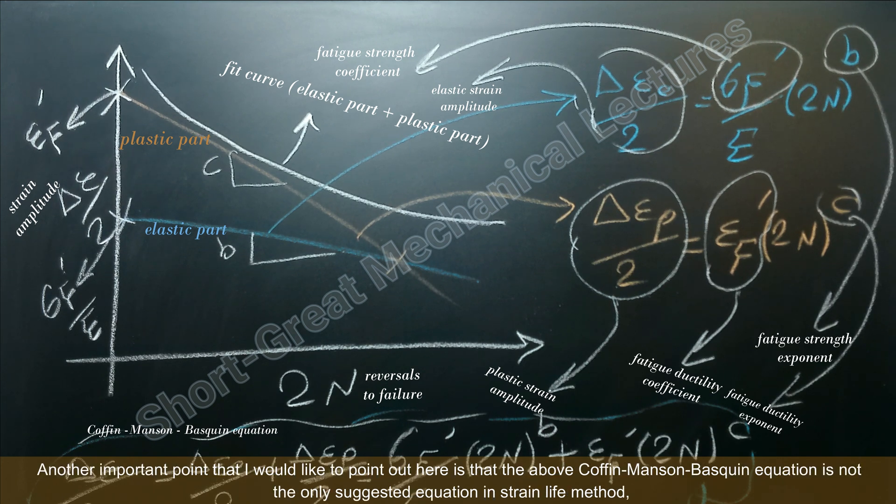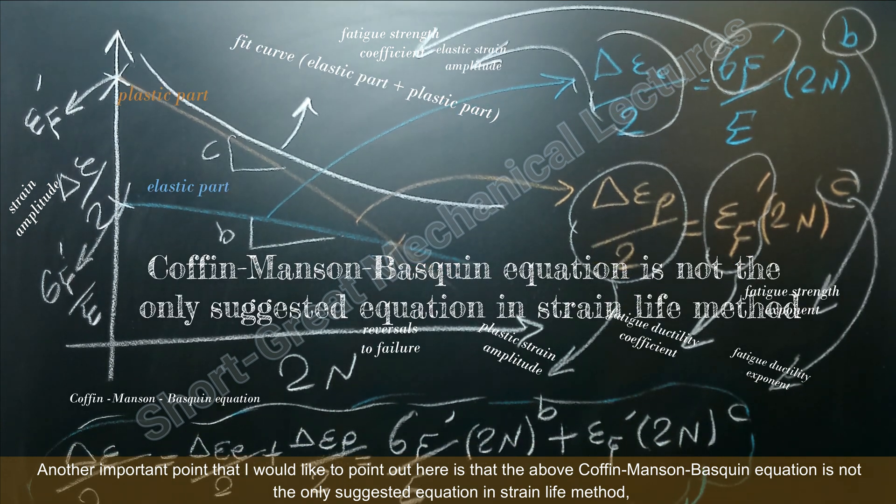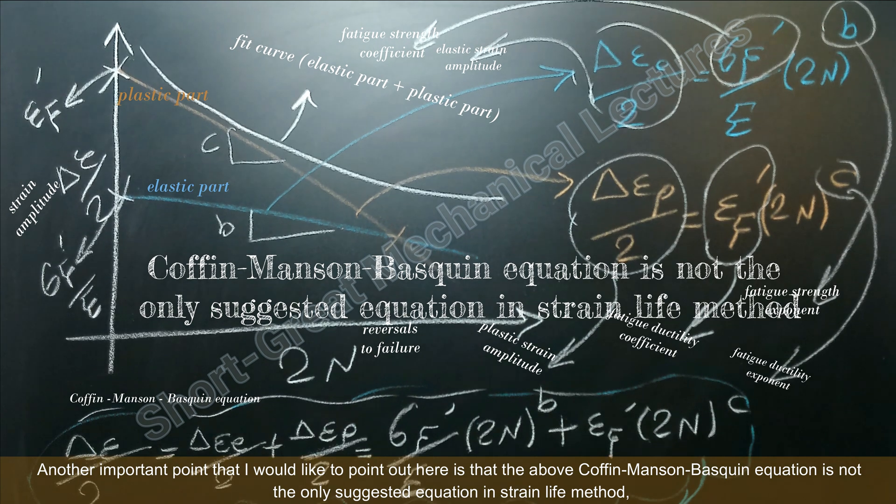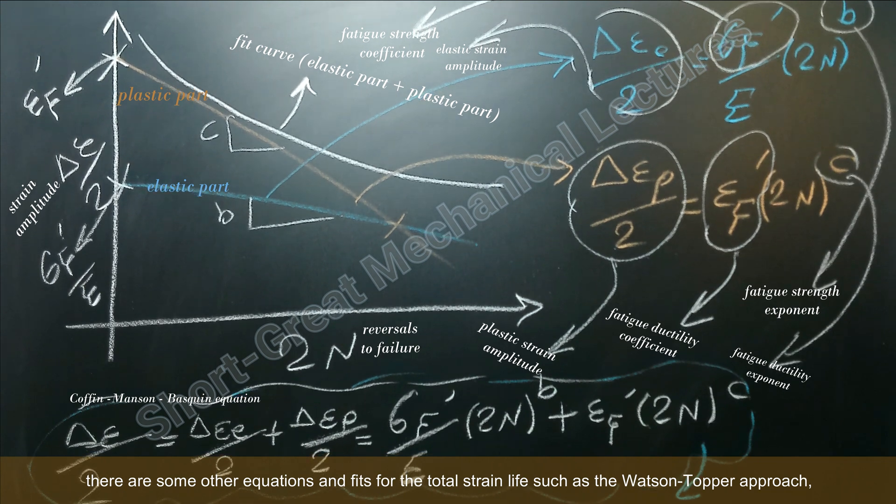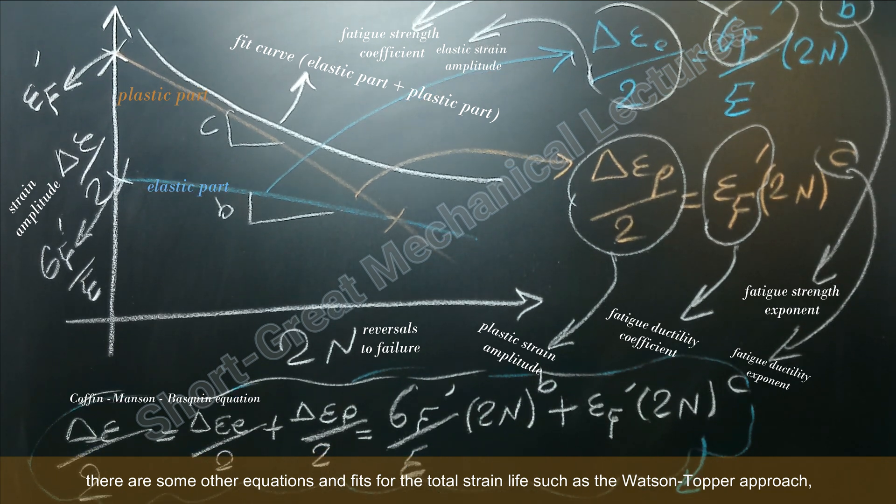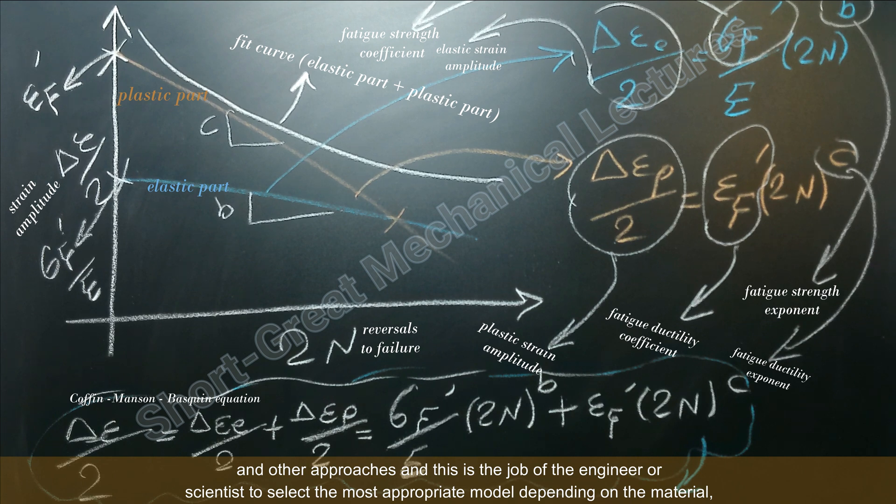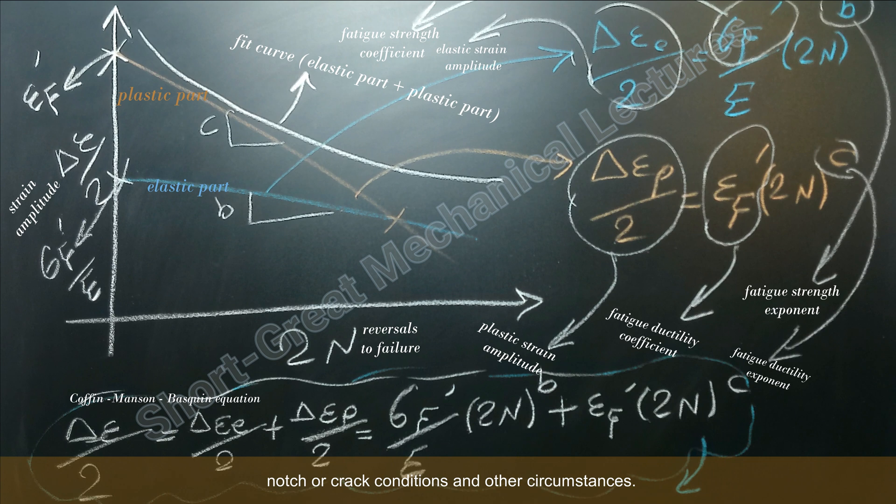Another important point that I would like to point out here is that the above Coffin-Manson-Basquin equation is not the only suggested equation in a strain life method. You know, there are some other equations and fits for the total strain life, such as the Watson-Topper approach and other approaches. And this is the job of the engineer or scientist to select the most appropriate model depending on the material, notches or crack conditions, and other circumstances.